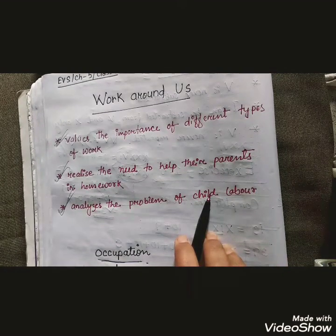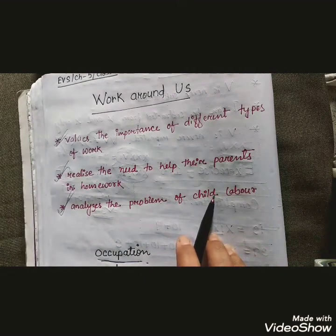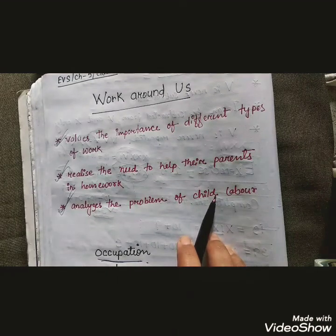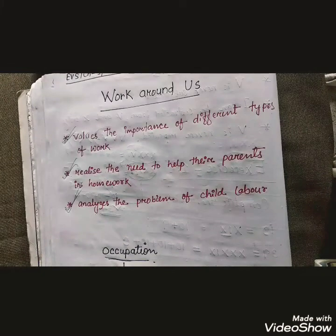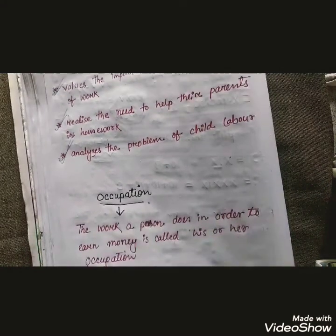First of all I will show you one picture. Here you can see four pictures. Can you identify what is common in all of them? Yes — in these four pictures they all are working. All these pictures show people doing different kinds of work. The work a person does in order to earn money is called his or her occupation.